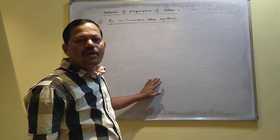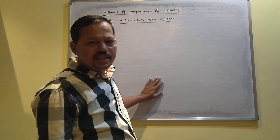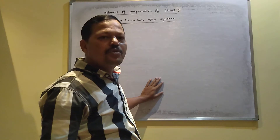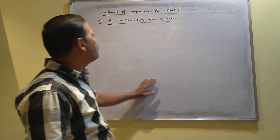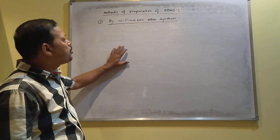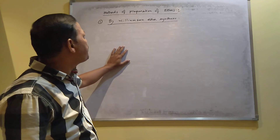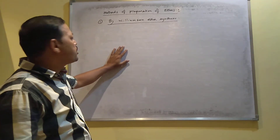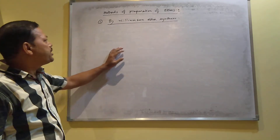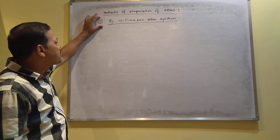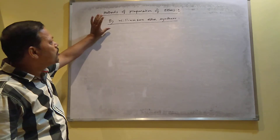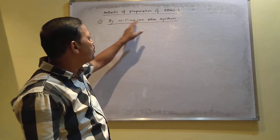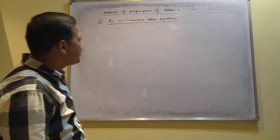Yesterday we started ether compound nomenclature and covered isomerism. Today I will cover how to prepare ethers in the laboratory — the methods of preparation. The most important method is called the Williamson method, commonly known as Williamson ether synthesis.